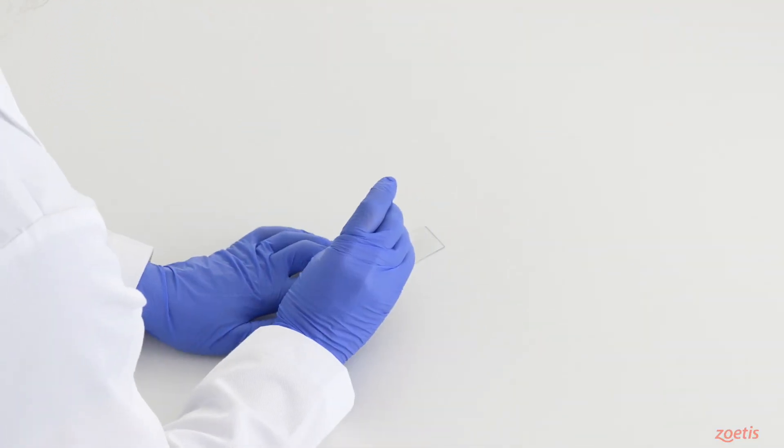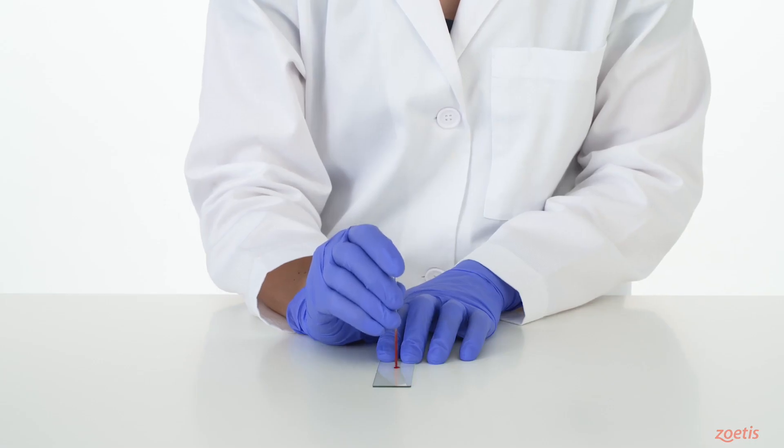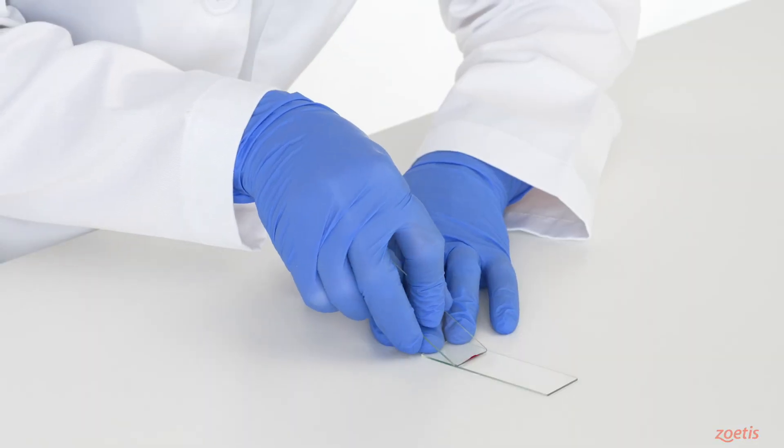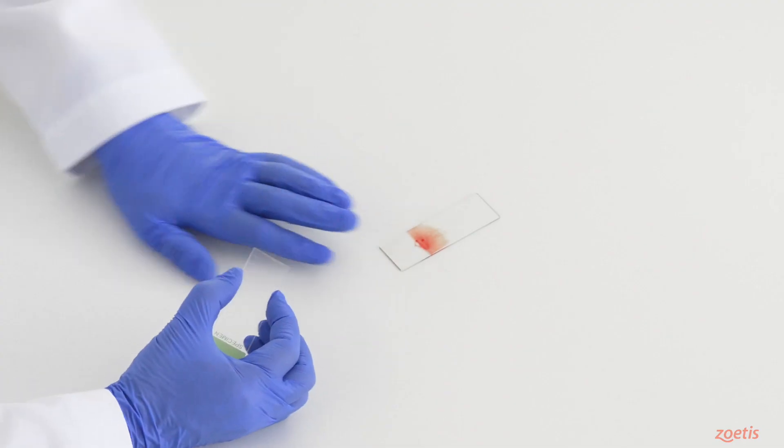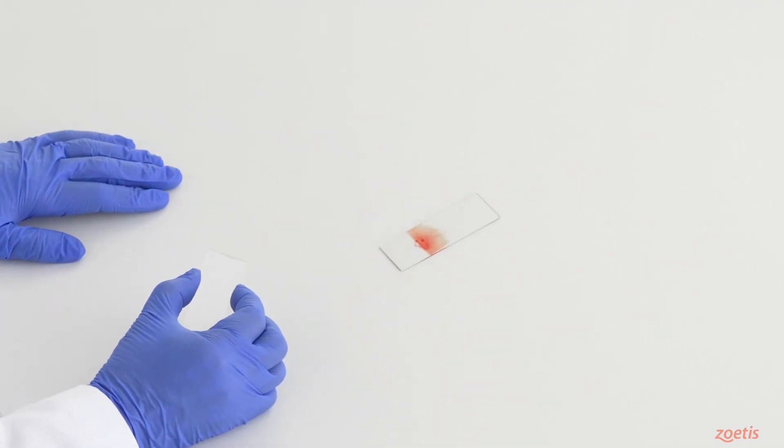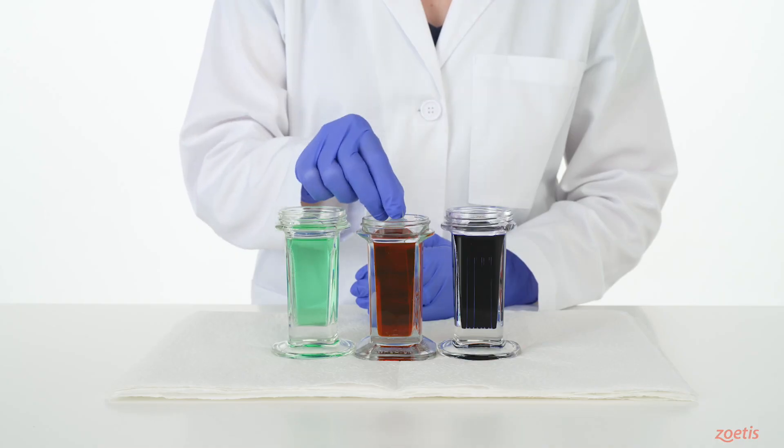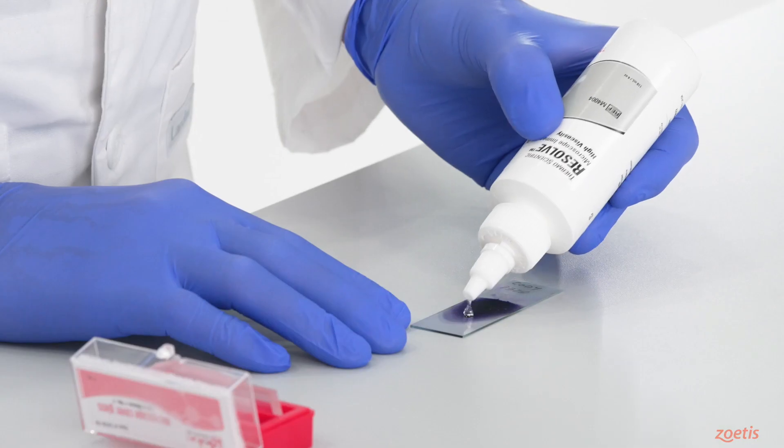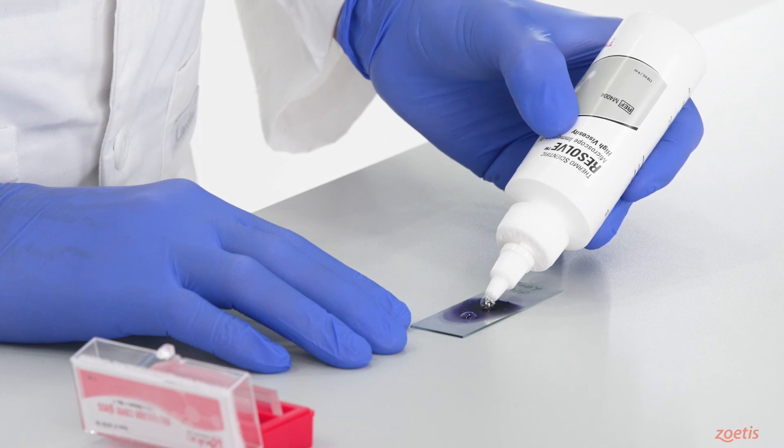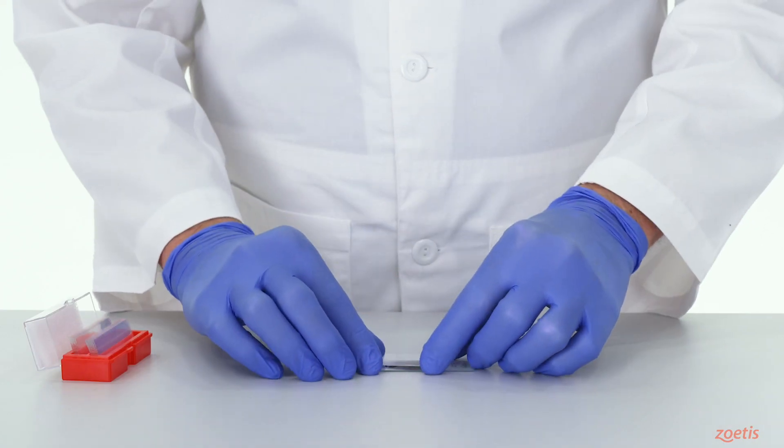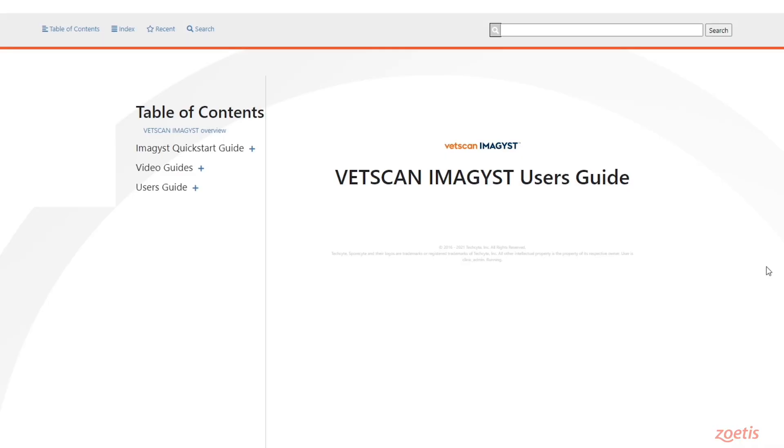The next step is to prepare a cytology slide using industry best practices. After properly preparing your slide and allowing it to air dry, you will need to stain your slide. Once a slide is prepped and stained, add a cover slip. Refer to our how-to videos on preparing a cytology slide in the user's guide.